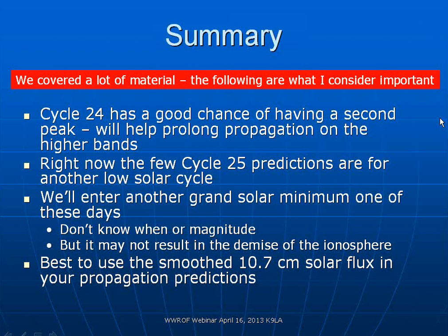Mike asks: have you ever run smooth sunspot numbers using 13 months or 11 months, and what might that look like? It would probably look pretty similar to the official smooth sunspot number. The official smooth is actually 13 months of data with the two extreme ends weighted by a half. Once you start averaging the monthly means it's easy to play with in Excel. There's probably not a lot of difference between an 11-month and 13-month smoothing.